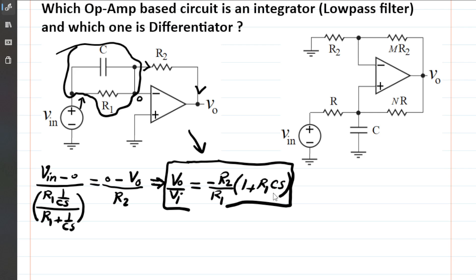What is it saying? Imagine you go to super low frequency, or DC — S, which is jω, where ω is zero for DC. So at low frequency or DC, as expected, this capacitor is open circuit impedance, and it's just simply R1 and R2 — a simple inverting amplifier. Therefore the gain, or Vout over VN, is negative R2 over R1, as expected.